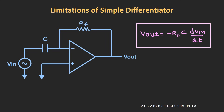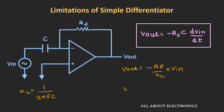Now let's see some limitations of this simple differentiator. When designing a practical differentiator, we can express the output voltage Vout as −Rf/Xc times Vin, where Xc is the reactance of the capacitor given by 1/(2πFC). So the gain of this differentiator equals −Rf × 2πFC, which is directly proportional to frequency F.